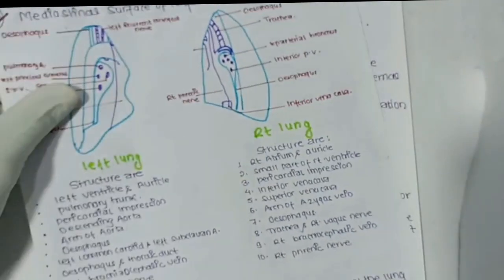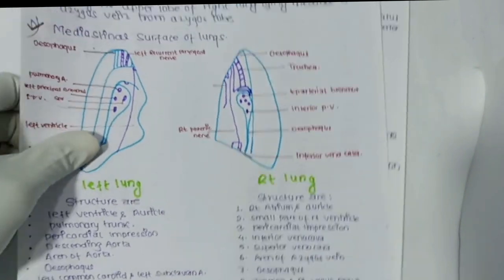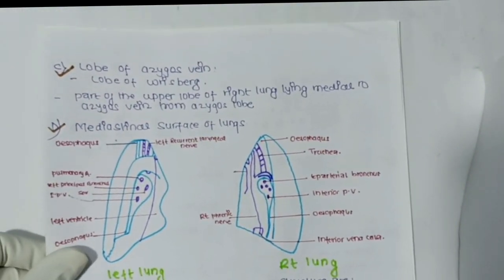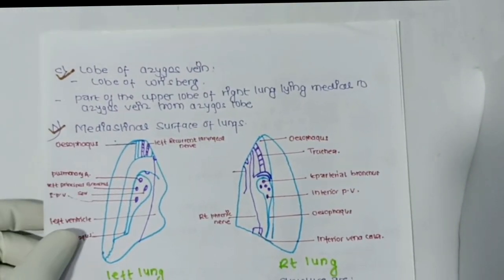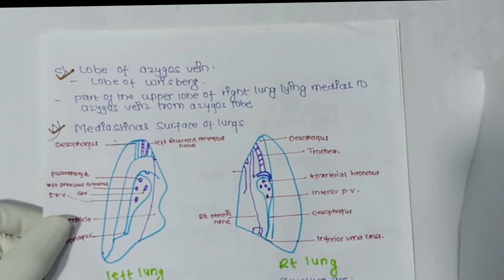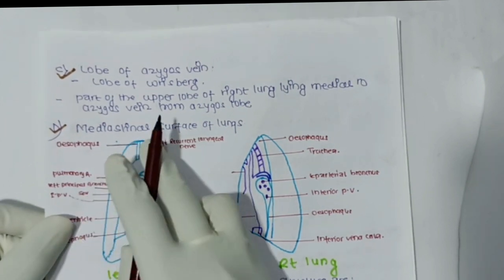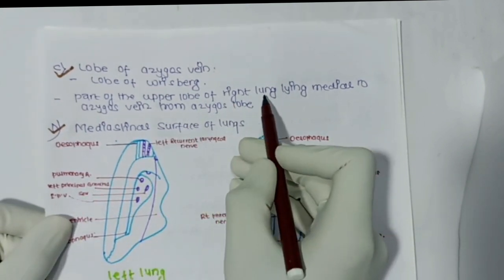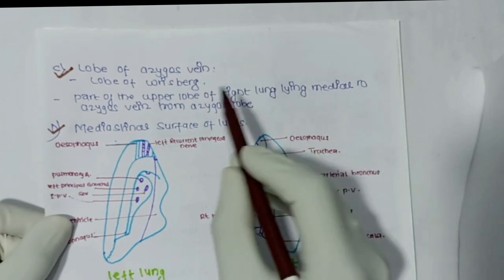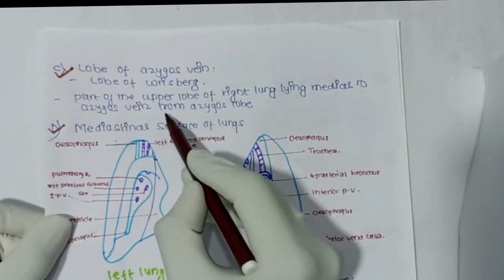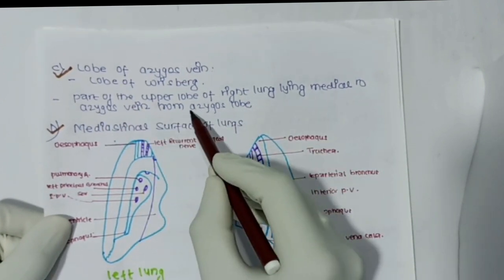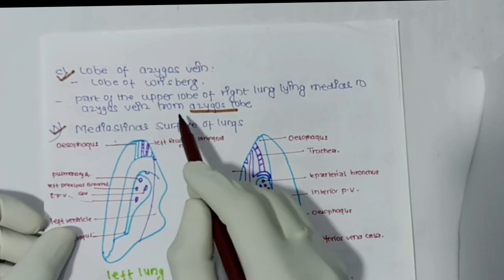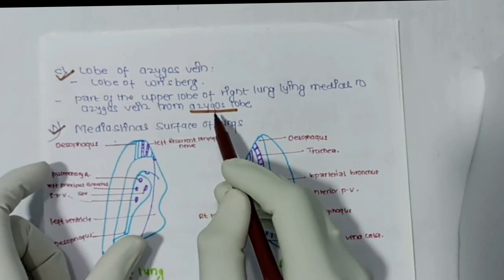The lobe of azygous vein: the upper part of the right lung lying medial to the azygous vein forms the azygous lobe. Simply put, the azygous vein forms the azygous lobe.